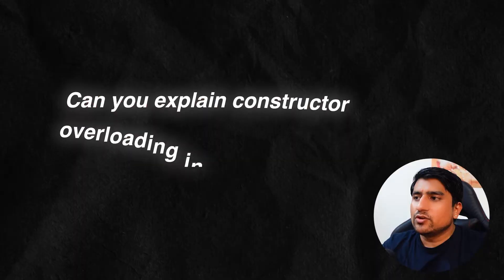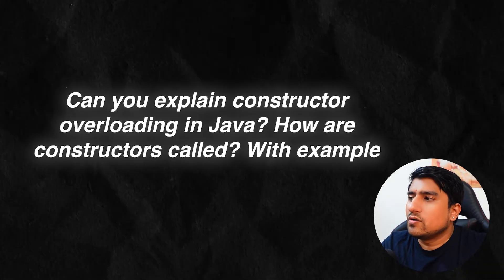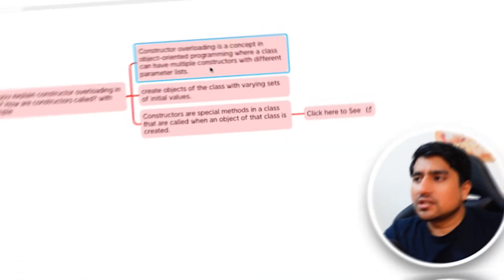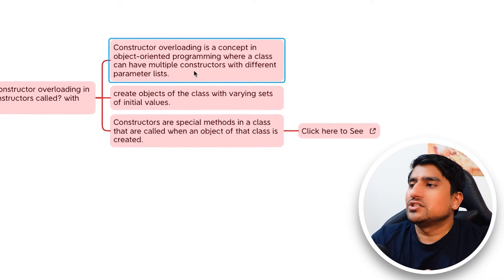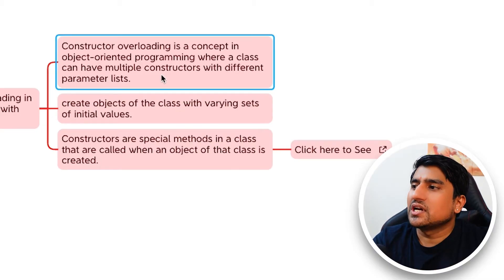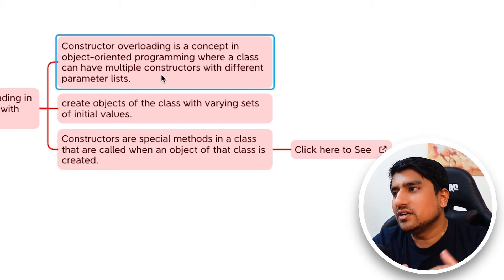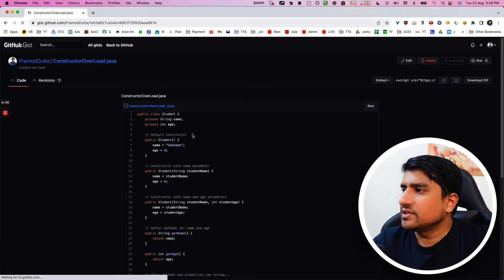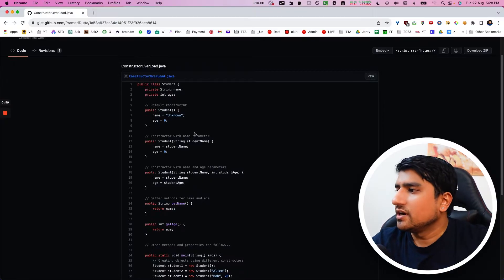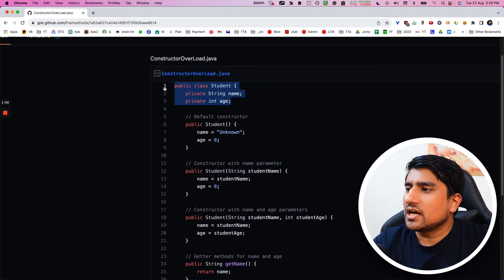Let's jump into the first question: can you explain constructor overloading in Java and how constructors are called, with an example? Constructor overloading is a concept in object-oriented programming where a class can have multiple constructors with different parameter lists.